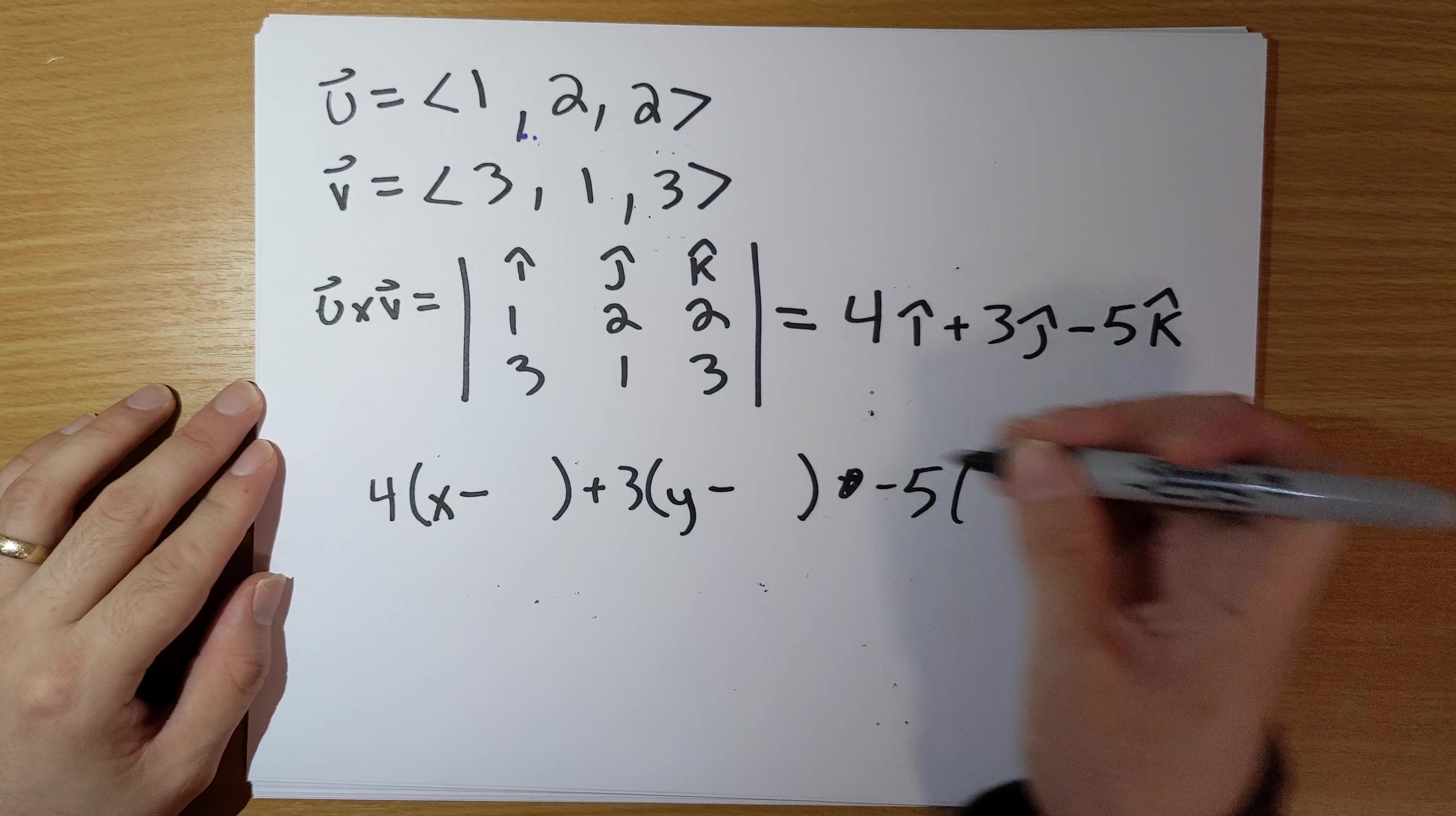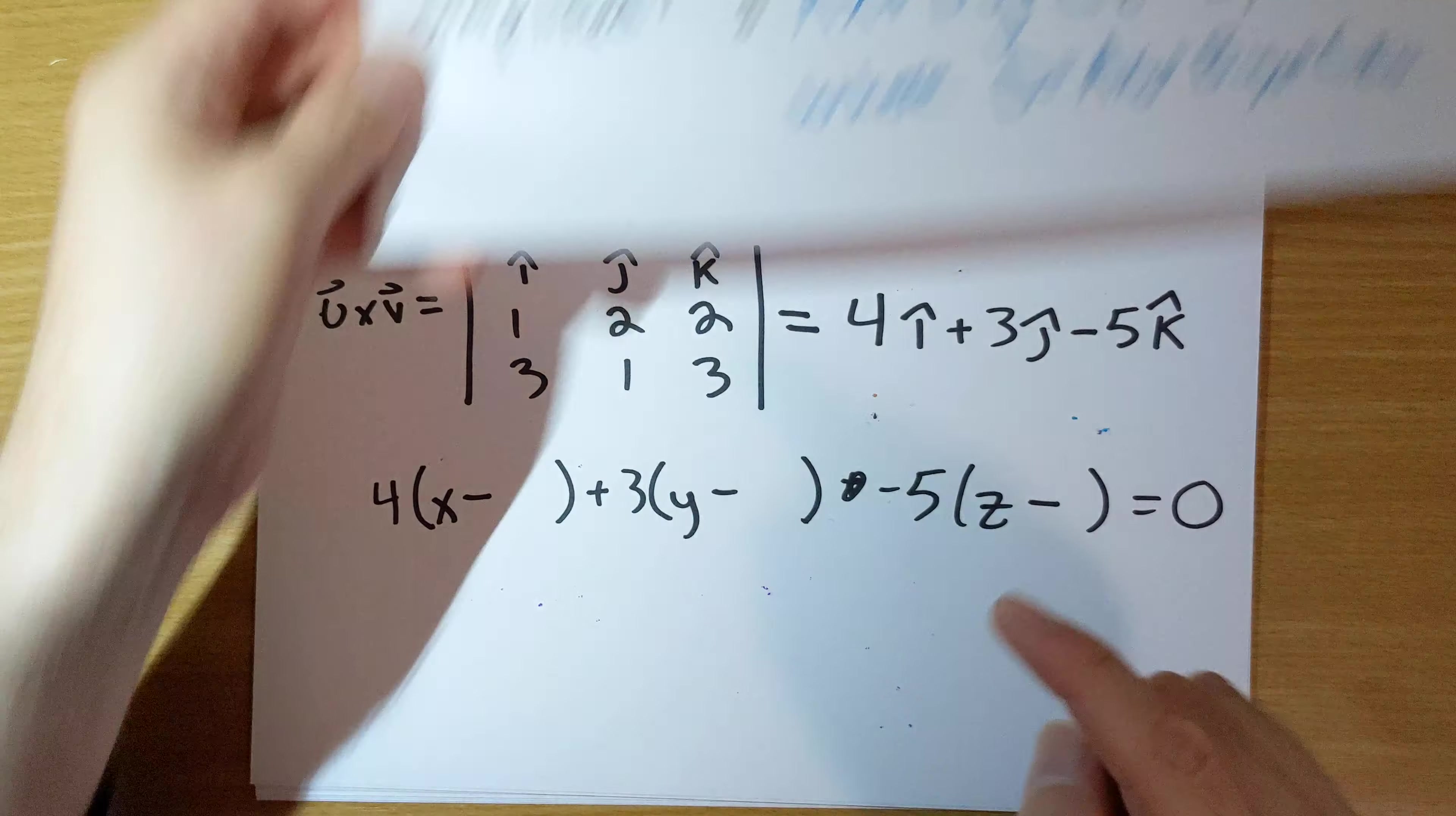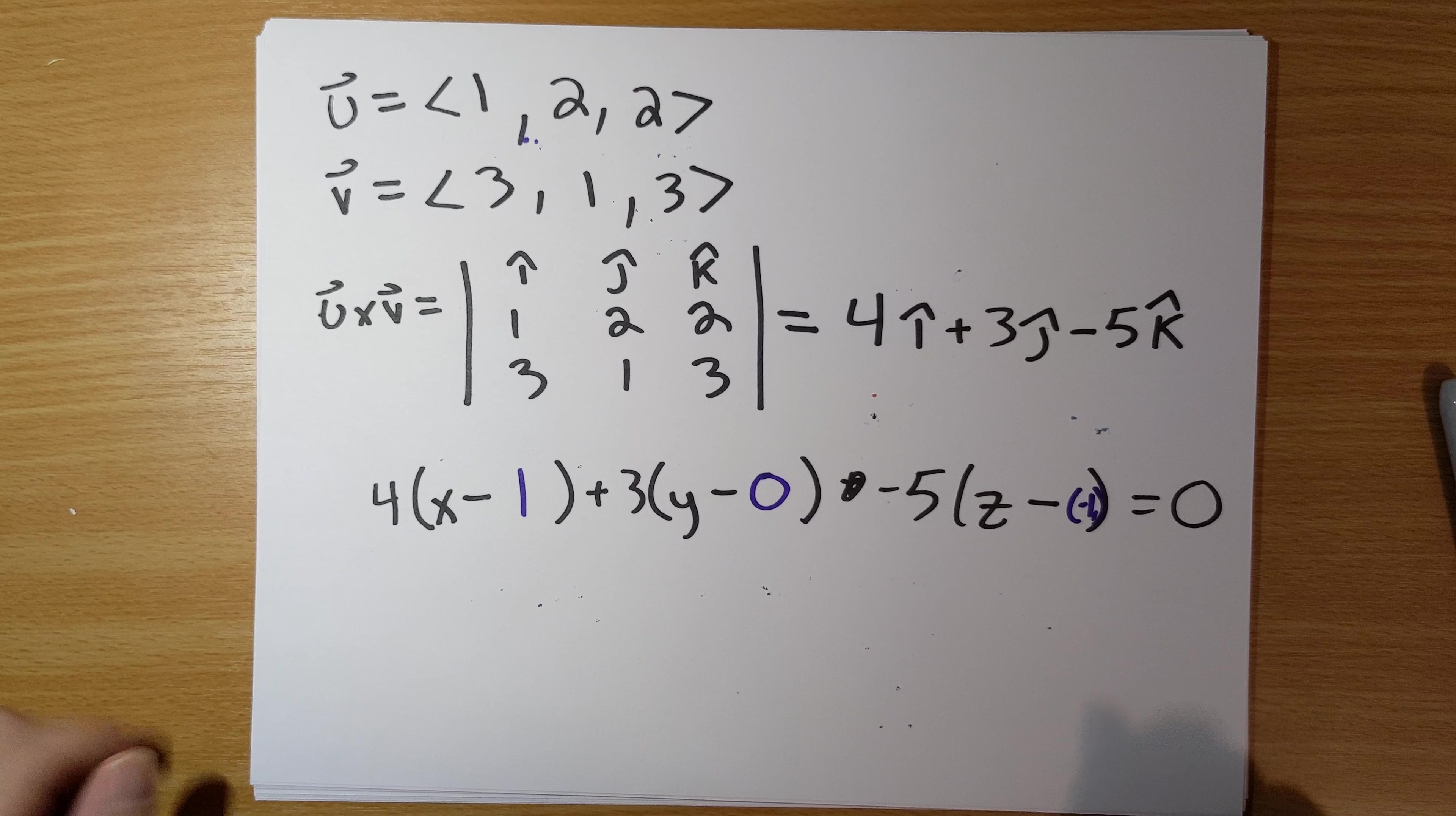So, X minus something, Y minus something, Z minus something. What I've done right here is I've taken our normal vector, plopped in 4, 3, minus 5. And now I just have to plop in the point that I chose here, which was (1,0,-1). So, this is our equation of the plane. We can certainly simplify it.